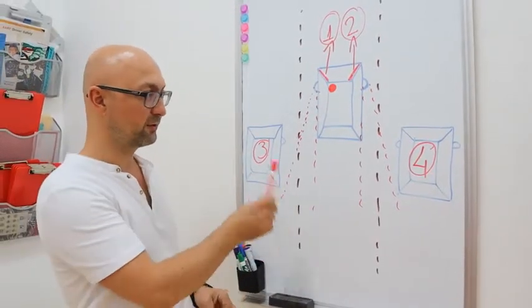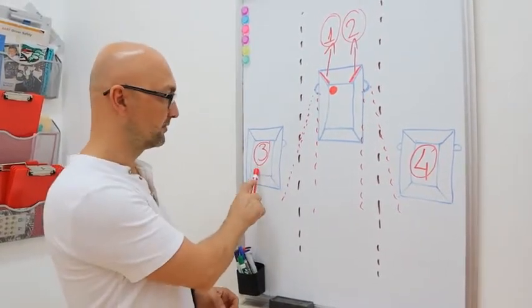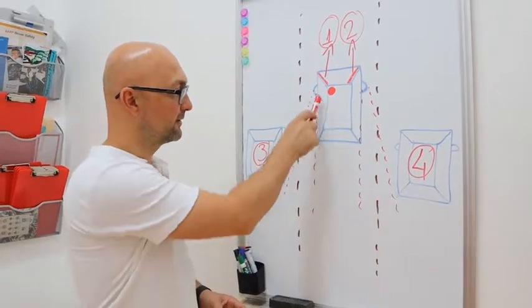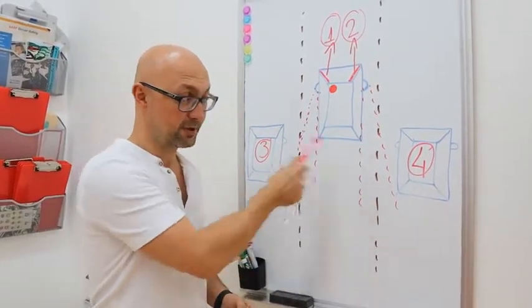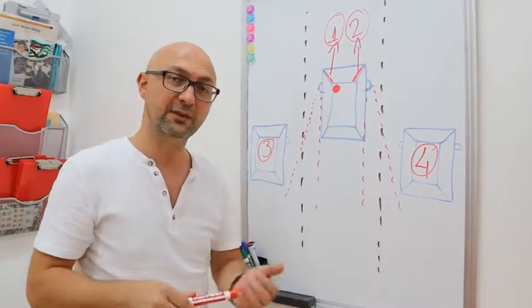There are two more blind spots, as you see in this situation, like this, three and four. If there's a car next to you, on your right or on your left, in these positions, you will not be able to see these cars in your mirrors.